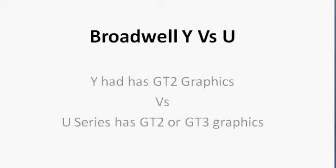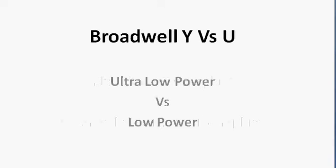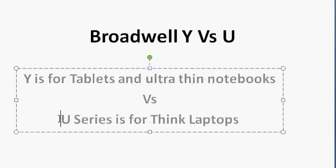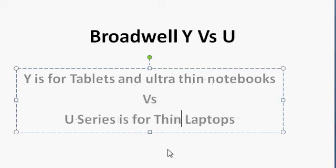We have started seeing the launch of the Broadwell Y-series processor, and it's time to review the difference between the Y-series and the U-series. The Y-series is basically an ultra-low-power processor, and the U-series is also a low-power processor, but not as low as the Y-series. The U-series is designed primarily for thin laptops.